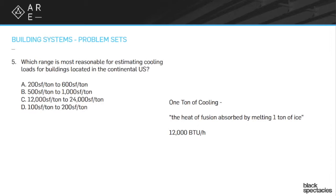Technically, a ton of cooling is the heat of fusion. When ice turns to water, there's a process that happens, and it's the amount of energy it takes for that process to happen — for one ton of ice to turn to water.